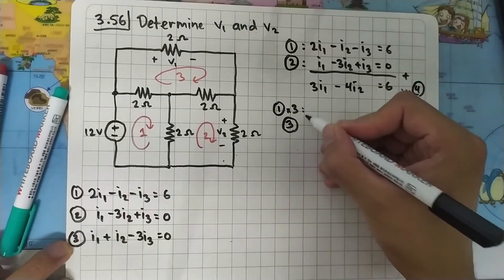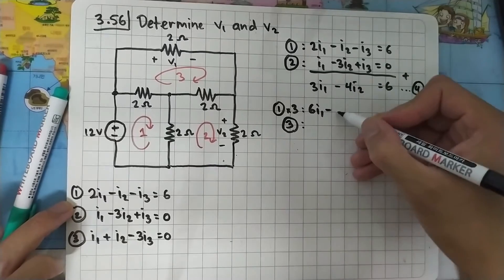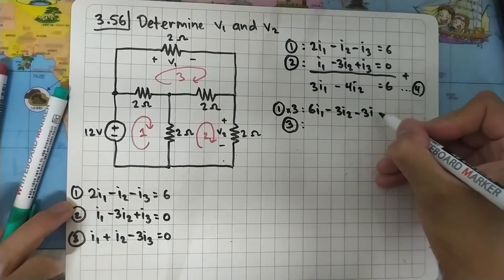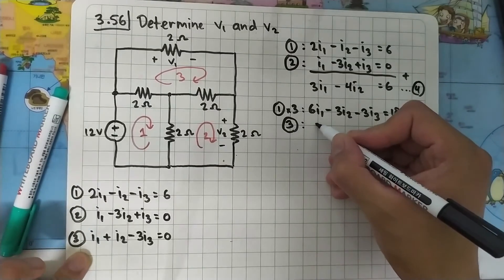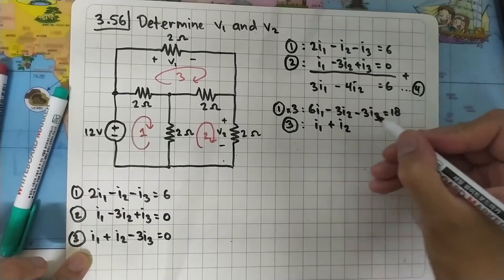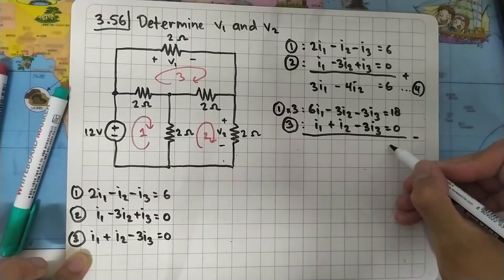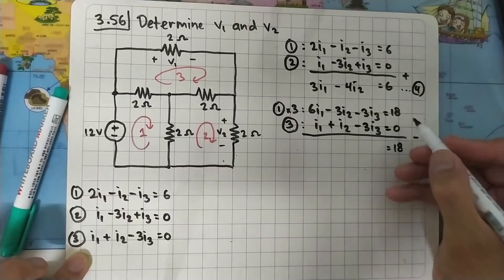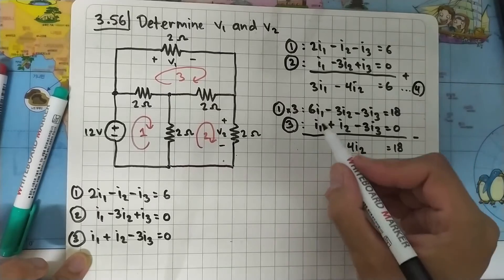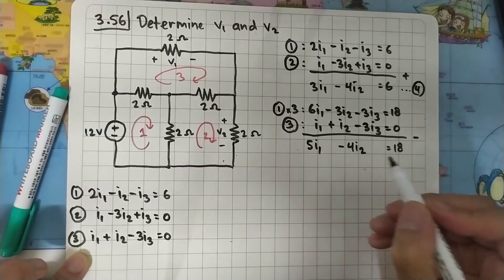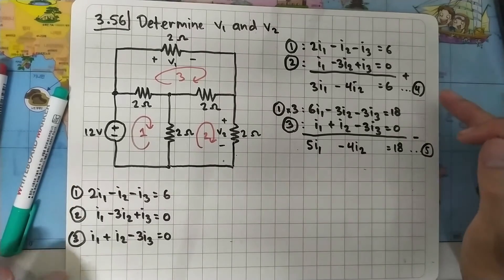Now multiply Equation 1 by 3: 6I1 - 3I2 - 3I3 = 18. Subtracting Equation 3 (I1 + I2 - 3I3 = 0) from this cancels the I3 terms, giving: 5I1 - 4I2 = 18. This is Equation 5.